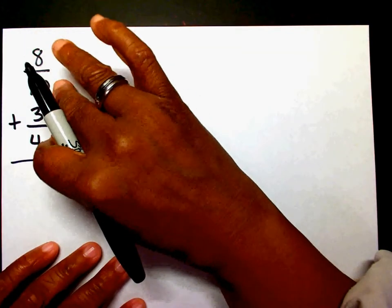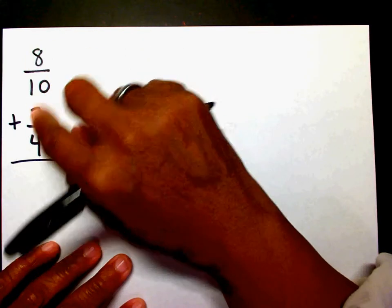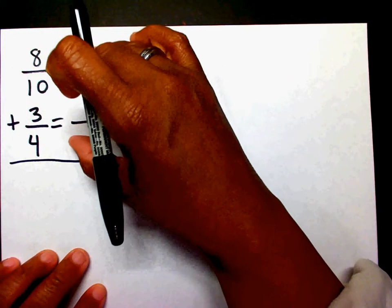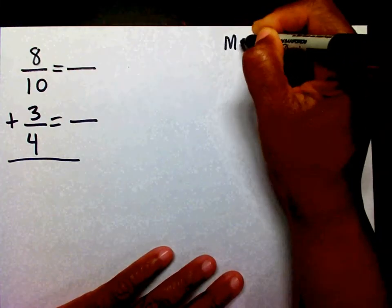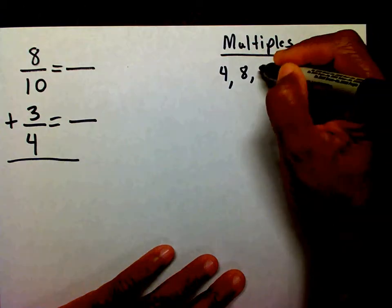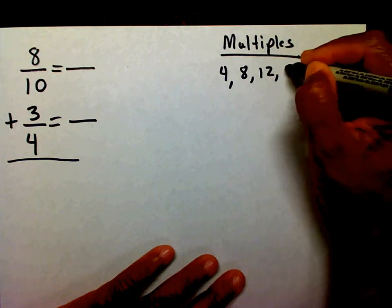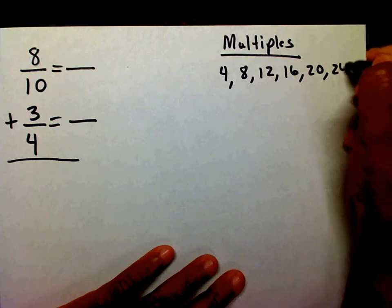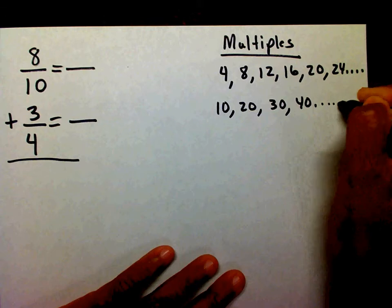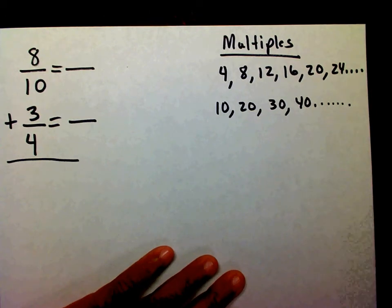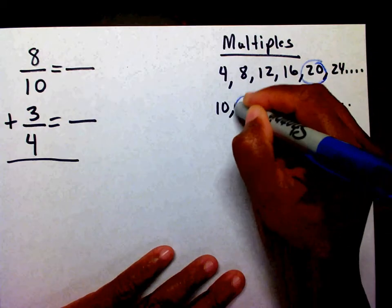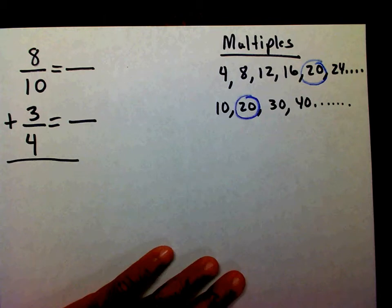I have two different denominators: a 10 and a 4. I need to get a new denominator because I can't add these fractions until the denominators are the same. So I'll list my multiples. Multiples of 4: 4, 8, 12, 16, 20, 24 and on. Multiples of 10: 10, 20, 30, 40 and on. The smallest number they share is 20, so my new denominator is 20.